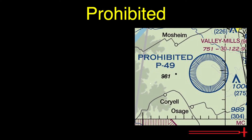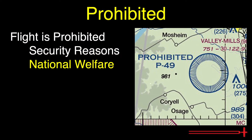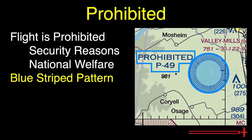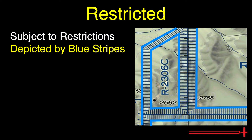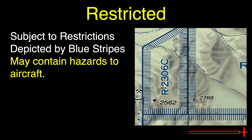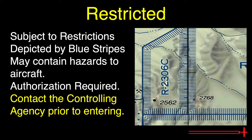Prohibited areas contain airspace within which the flight of aircraft is prohibited. These areas are established either for security reasons or other reasons of national welfare. Another example of prohibited airspace would be the area surrounding Washington, D.C. These areas are depicted on the sectional by a blue striped pattern with a code beginning with 'P.' Restricted areas may contain unusual or invisible hazards to aircraft, such as artillery or guided missiles. Entering restricted areas without authorization from the controlling agency may be extremely hazardous to the aircraft and its occupants. We'll want to contact the controlling agency to request entry. Plan to avoid restricted airspace altogether, as aircraft are rarely given the chance to enter while the area is active.